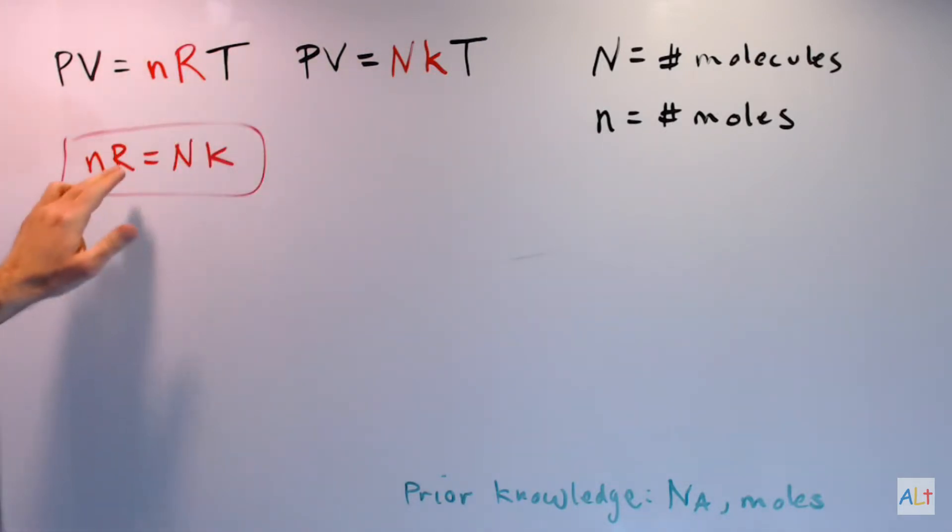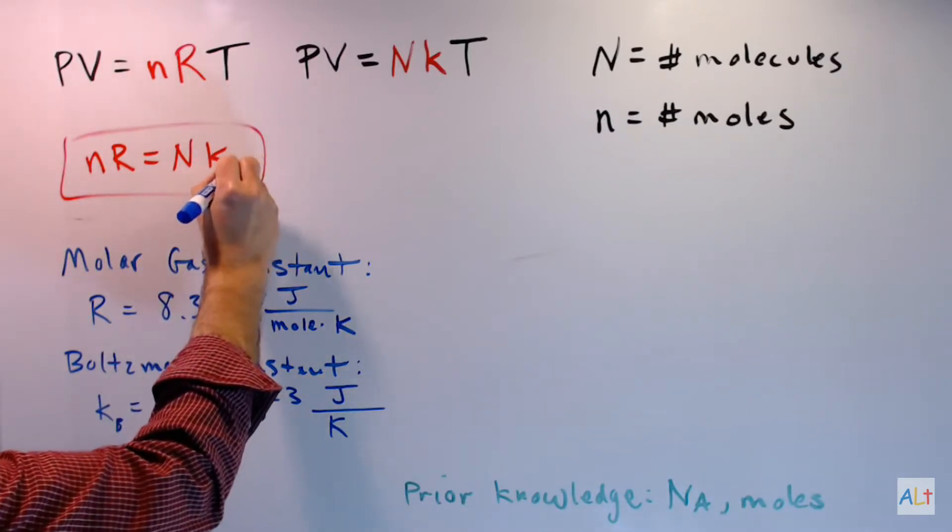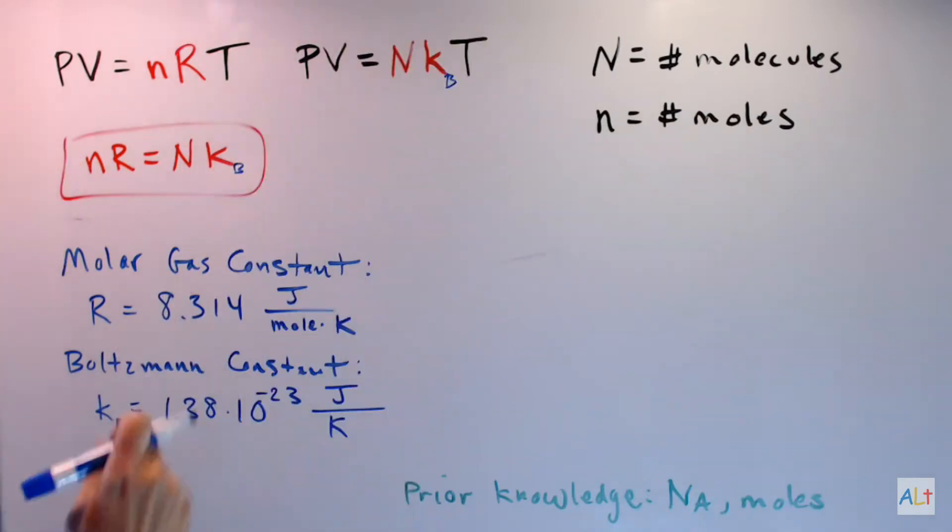Let's remind ourselves of what some of these things mean. So here we have R, the molar gas constant, and there's k, the Boltzmann constant. Sometimes you see this with a subscript and sometimes not.